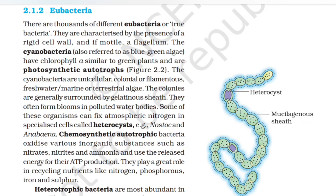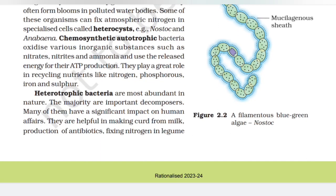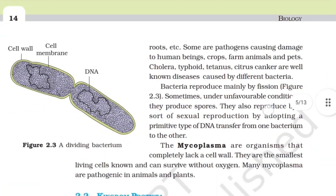Some cyanobacteria can fix atmospheric nitrogen in specialized cells called heterocysts — e.g., Nostoc and Anabaena. Chemosynthetic autotrophic bacteria oxidize various inorganic substances such as nitrates, nitrites, and ammonia, and use the released energy for their ATP production. They play a great role in recycling nutrients like nitrogen, phosphorus, iron, and sulfur. Heterotrophic bacteria are the most abundant in nature, and the majority are important decomposers. Many of them have a significant impact on human affairs — they are helpful in making curd from milk, production of antibiotics, and fixing nitrogen in legume roots.